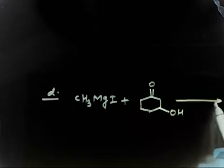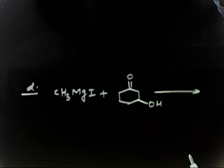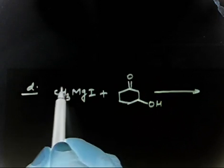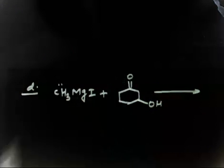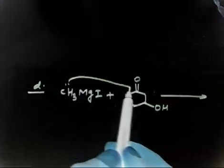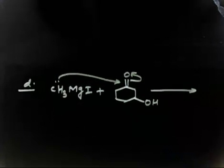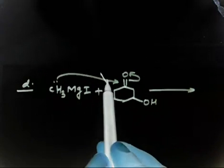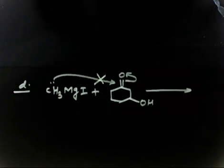What product will you get? You may be thinking that C minus can attack here and this can go up. You may be thinking something like this, but this will not happen. Why will this not happen? What will happen then?